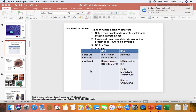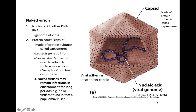The following slides give specific examples of naked and enveloped viruses, both DNA and RNA types. In naked viruses, the nucleic acid inside the capsid could be DNA or RNA. The outermost layer is made of protein — called the capsid — made up of protein subunits called capsomeres. Capsomeres can form capsids of different shapes.